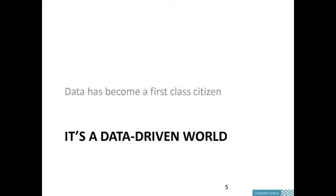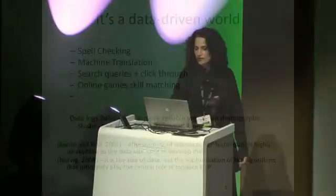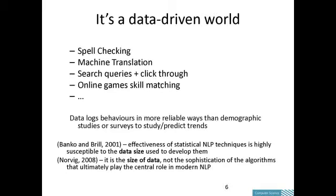Data has become a first-class citizen. Some technologies have seen tremendous differences by using a lot of data — spell checking, machine translation. I worked in a machine translation system pre-web, ontology-based, and it didn't scale. Now machine translation is about giving more text in French and Spanish — the more you have, the better. Banko and Brill at Microsoft Research and Peter Norvig have both written about the importance of data size.